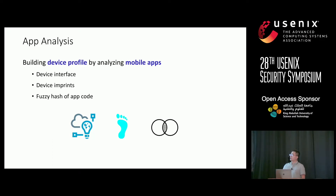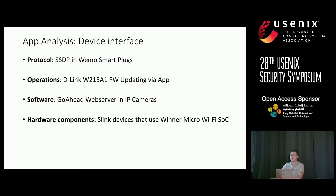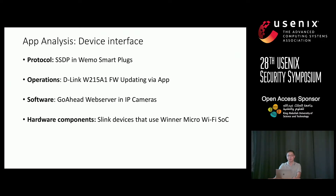The goal of app analysis is to build a device profile by analyzing mobile apps. We extract three kinds of information. One is the device interface — the network interface used between the mobile app and the IoT device — which tells us the protocol used, core feature operations, software running on the device like web servers on cameras, and hardware components involved in the product.